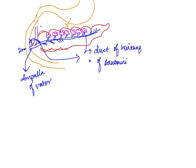The pancreas also has islets of Langerhans and acinar cells.